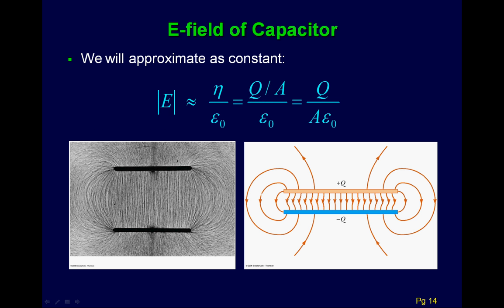Just a little reminder: here's the electric field of the capacitor. It is a constant electric field in between the capacitor plates — we want to remember that. That's really important, and we use this a lot in Physics 132.